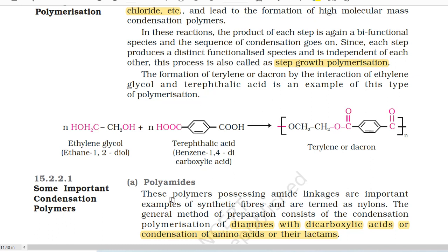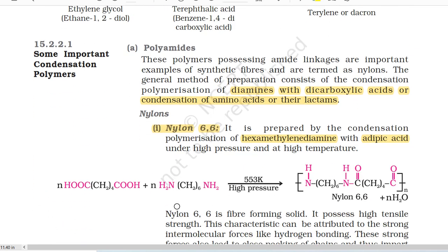The formation of Terylene or Dacron by the interaction of ethylene glycol and terephthalic acid is an example of this type of polymerization. Ethylene glycol (ethane-1,2-diol) plus terephthalic acid (benzene-1,4-dicarboxylic acid) gives Terylene or Dacron. 15.2.2.1 Some Important Condensation Polymers. A. Polyamides. These polymers possessing amide linkage are important examples of synthetic fibres and are termed as nylons. The general method of preparation consists of the condensation polymerization of diamines with dicarboxylic acids or condensation of amino acids or their lactams.